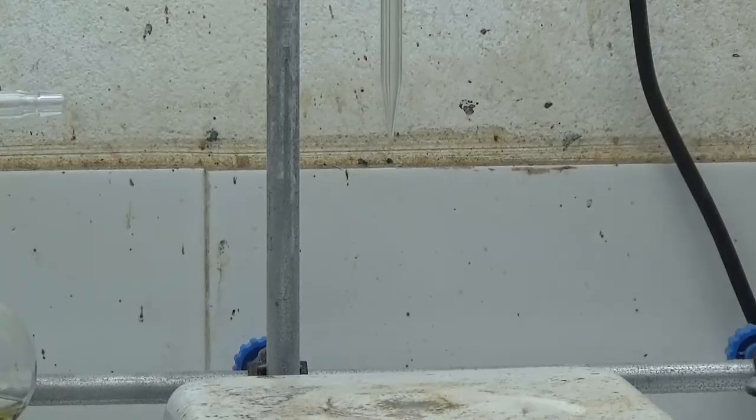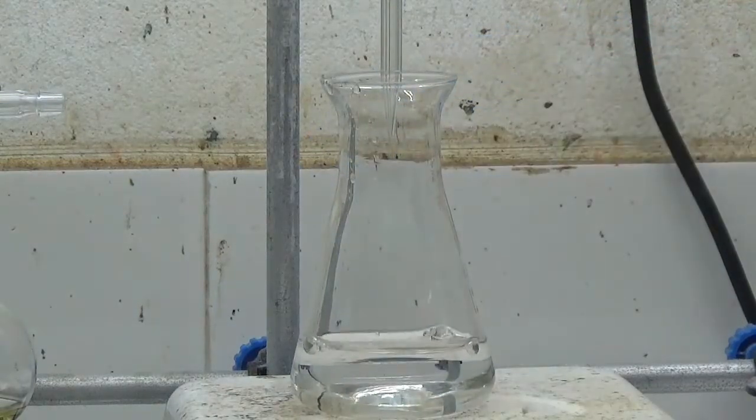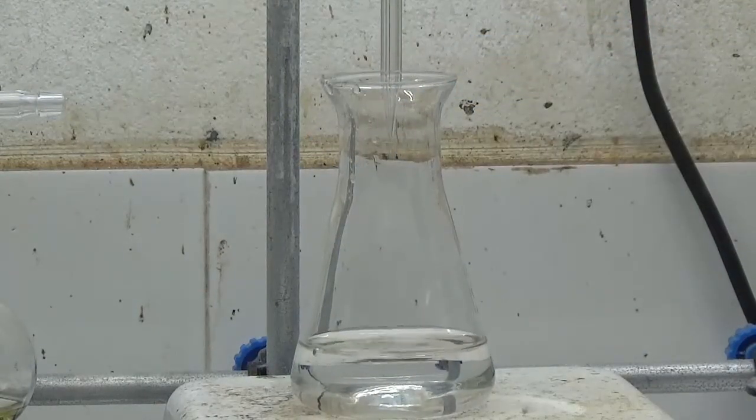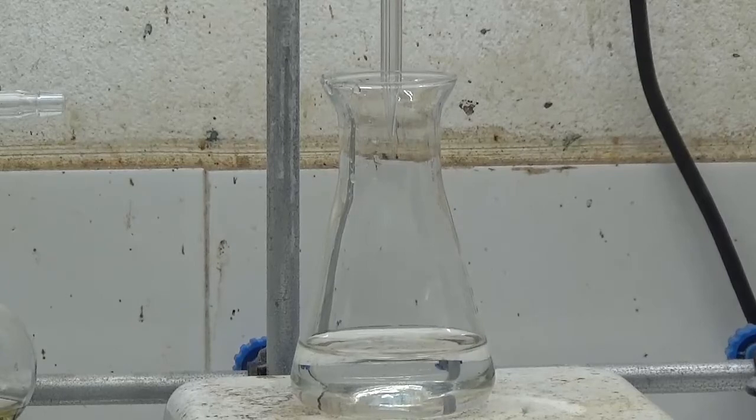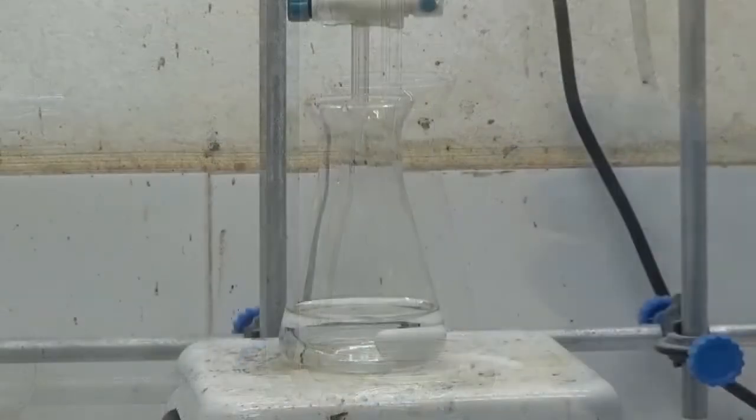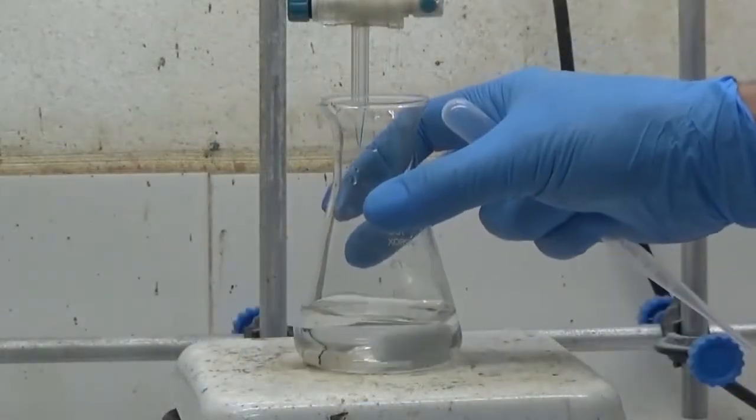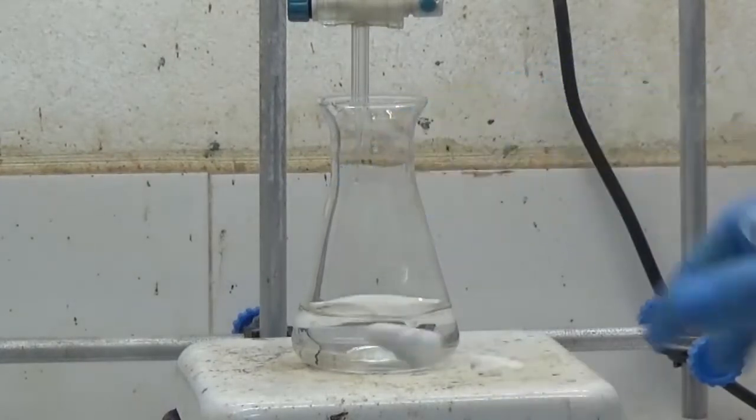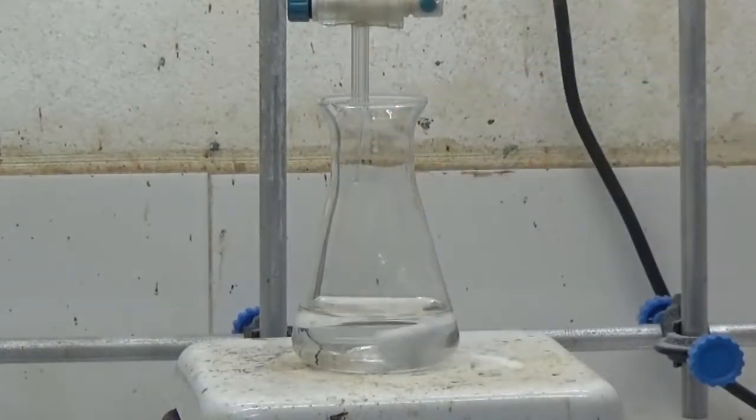A sodium hydroxide solution will be titrated with a 0.01 molar solution of hydrochloric acid. Put 30 ml of sodium hydroxide solution at a concentration of less than 0.01 molar in a 100 ml Erlenmeyer flask and add 4 drops of methyl orange solution.